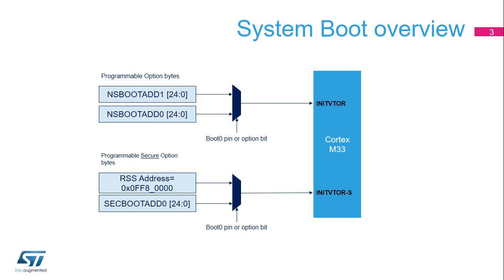The state of the boot 0 pin selects either non-secure boot address 0 or non-secure boot address 1. When TrustZone is enabled, init VTOR S inputs are used, which receives an address programmed in Option Bytes, or a fixed address when RSS is selected. The state of the boot 0 pin, or option bit N boot 0, selects which of the two addresses will be used.